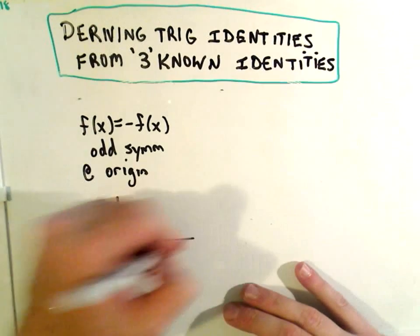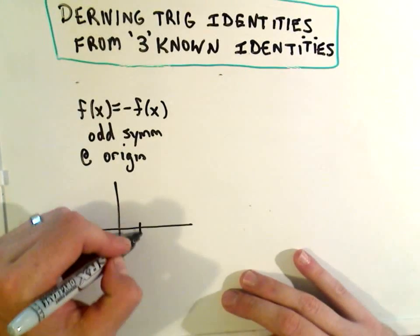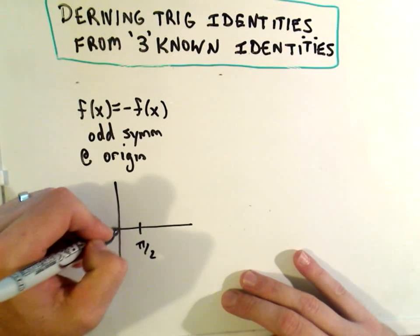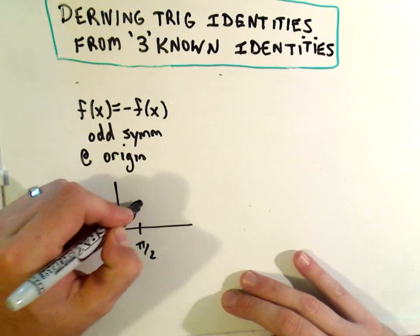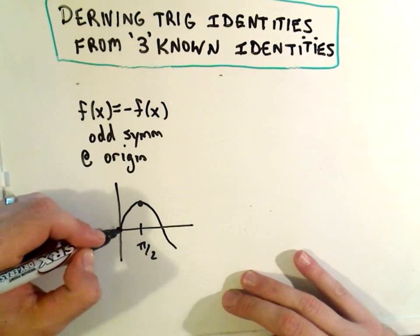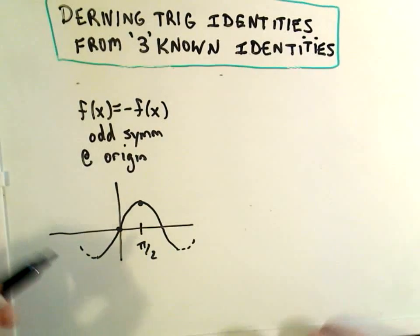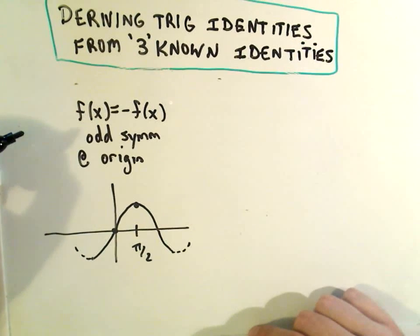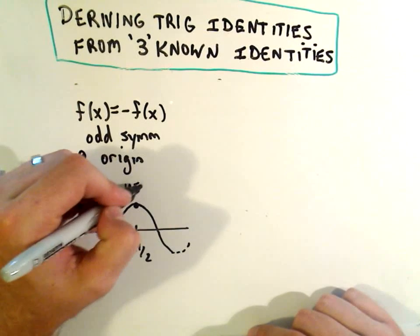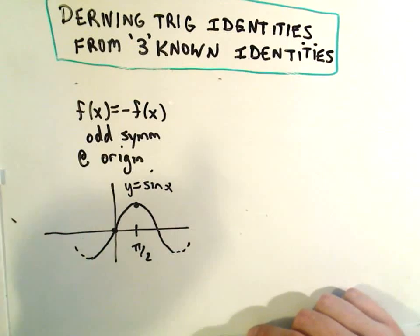If you think about the graph of sine x, sine starts at zero, and then it goes up to one, it comes down, it repeats, same thing on the other side. Well, sine turns out to be symmetric about the origin.